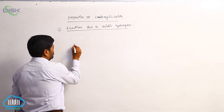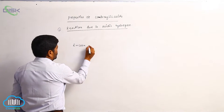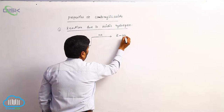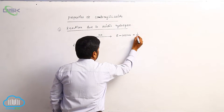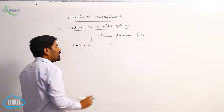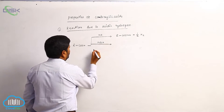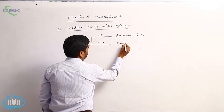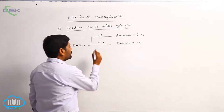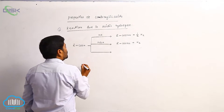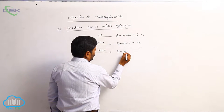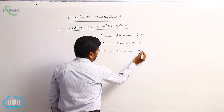Carboxylic acids generally react with sodium metal to form sodium carboxylate and liberate H2 gas. Because it is a strong metal, it also reacts with sodium hydride to form sodium salt and liberate H2 gas. The carboxylic acid reacts with sodium hydroxide to form sodium carboxylate and liberate H2O.